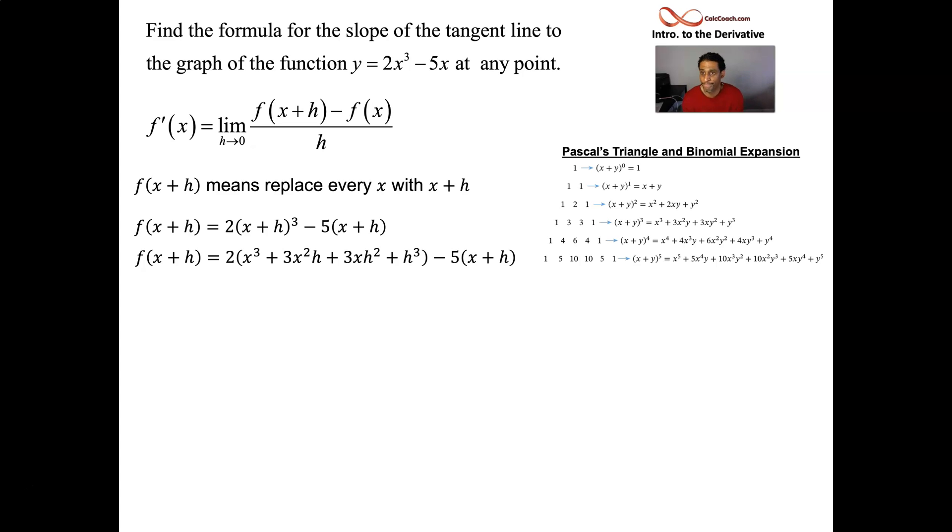It's beautiful. Have that guy handy. It helps you. And so we then distribute the two, distribute the negative five, and we have the first half of the numerator. Two x cubed and six x squared h and six x h squared and two h cubed. Distribute the minus five, minus five x and minus five h.